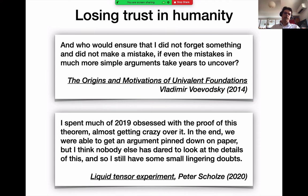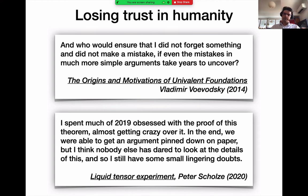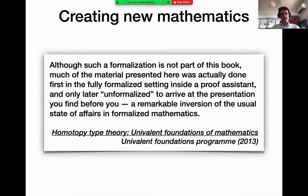A very interesting development using formal mathematics appeared in 2012 and 2013, when homotopy type theory was developed. I participated — we wrote a book. The introduction makes it clear that we didn't just write the book. Because the mathematics was so new and we weren't really sure how to use the new foundation, we first did it in formalized mathematics using proof assistants, because they would guide us and make sure we didn't make any mistakes. After we gained enough experience using formal mathematics, we then unformalized everything we knew and wrote the book so that the rest of the mathematicians could understand what was really going on.